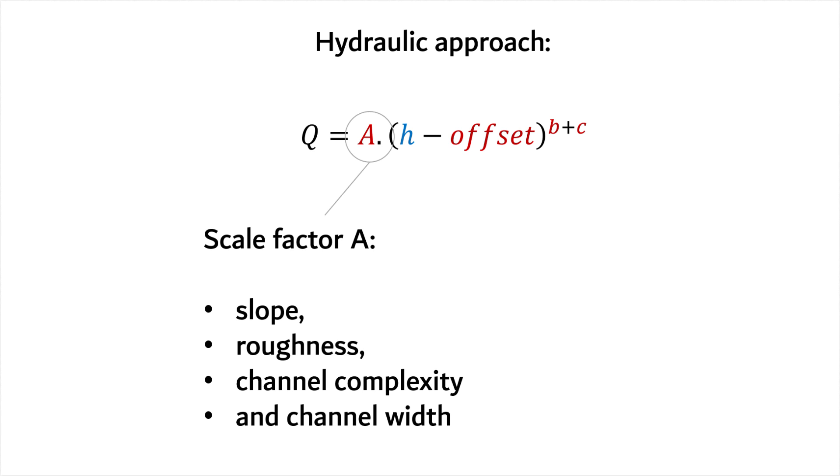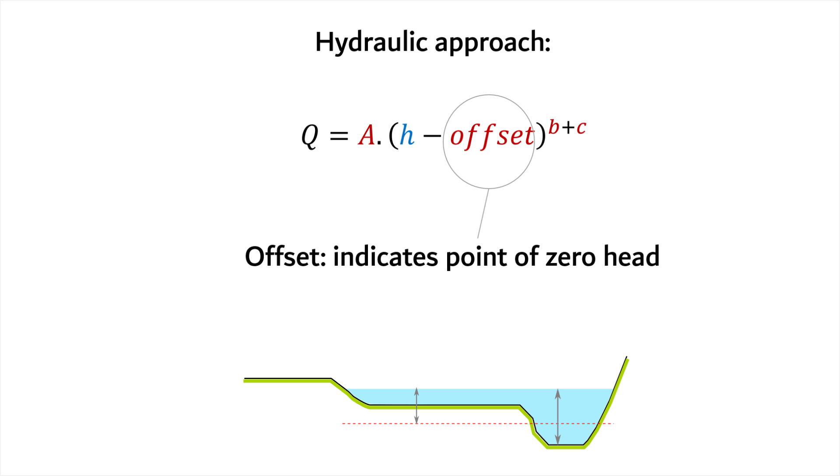The scale factor A is a function of slope, channel roughness, channel complexity and channel width. The offset indicates the point of zero head and can be calculated with the cross-section.